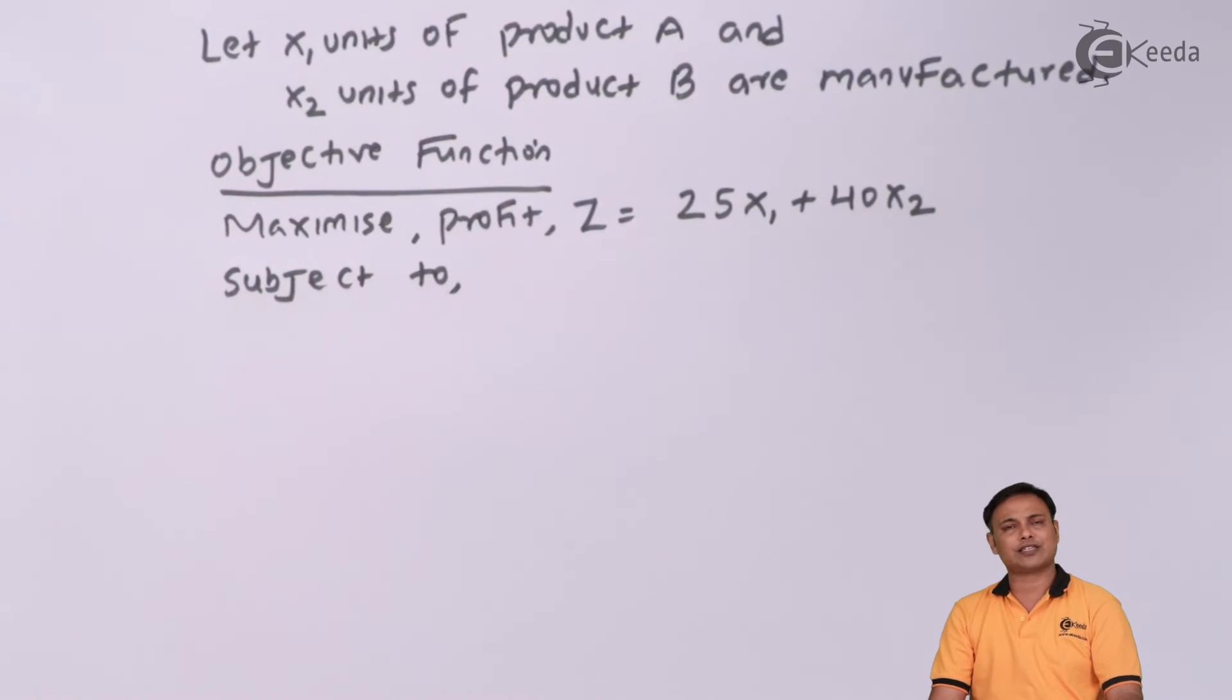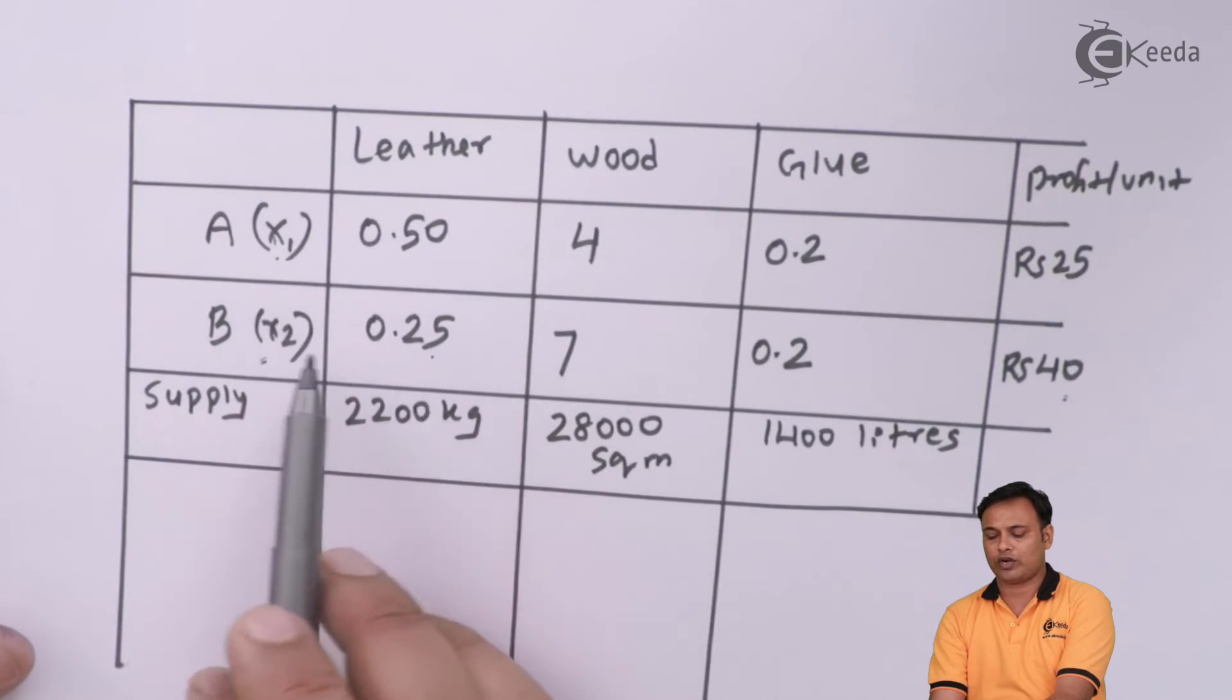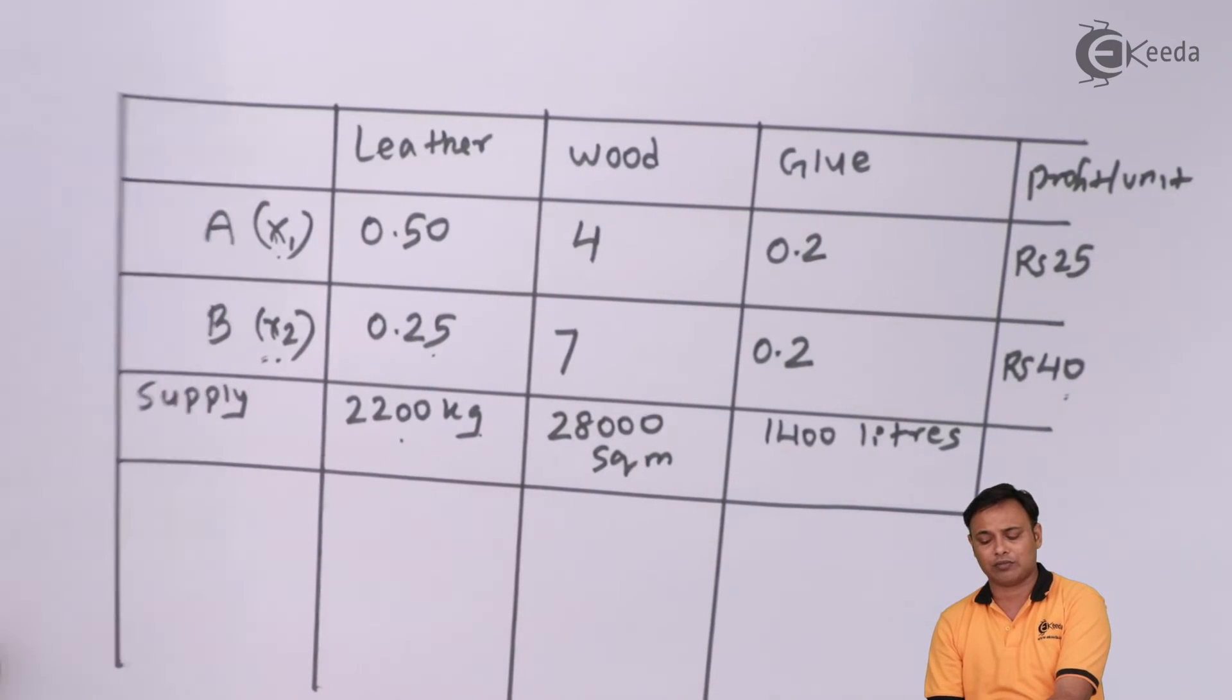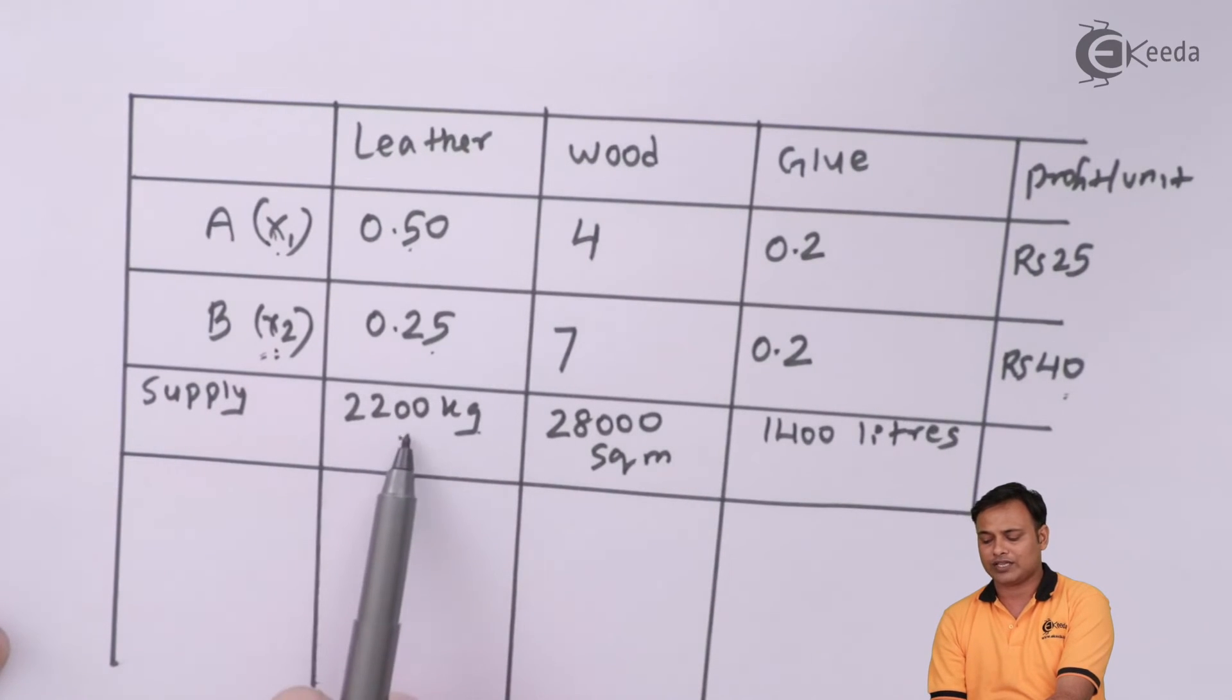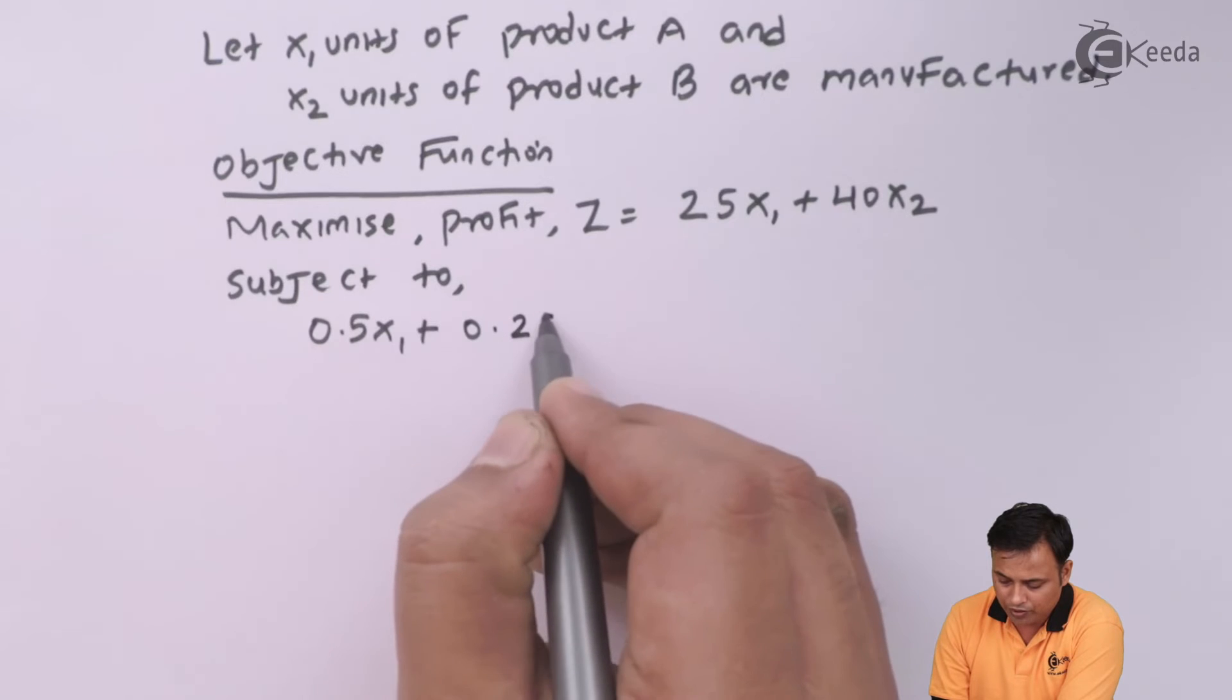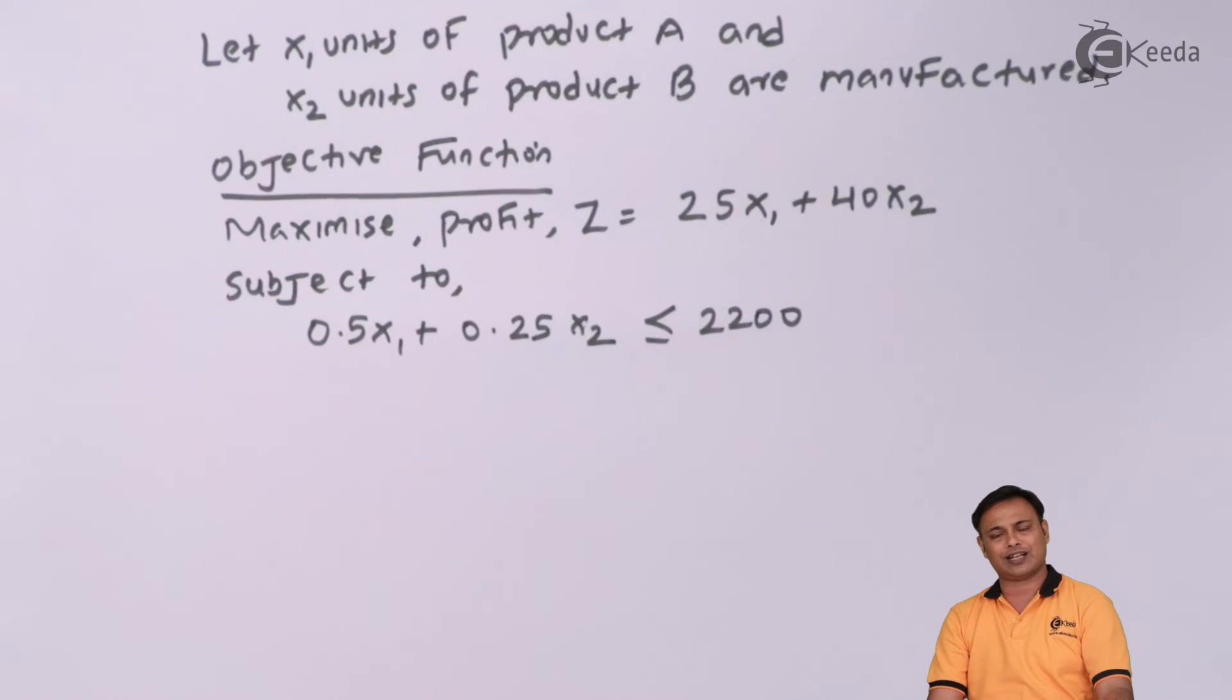Subject to what are my constraints? My first constraint is 0.5x1 plus 0.25x2, that is the total leather consumed. It cannot be more than 2200 kg, that is the maximum supply available. So, 0.5x1 plus 0.25x2 less than equal to 2200. This is the leather constraint.